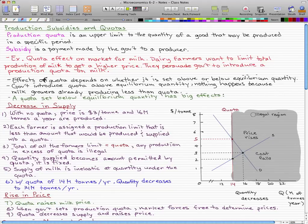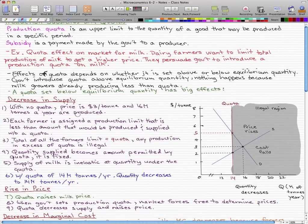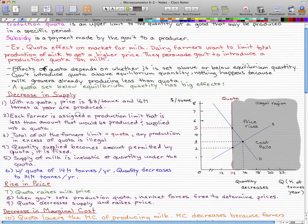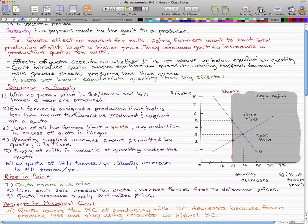So let's imagine in this graph we have this red line to the right of this equilibrium dot. Nothing will happen because the milk growers can already produce at the best level they can. Now if the quota is set below the equilibrium quantity, that has drastic effects, so there's really going to be like five different cases.